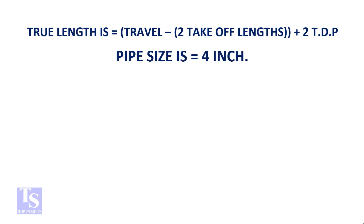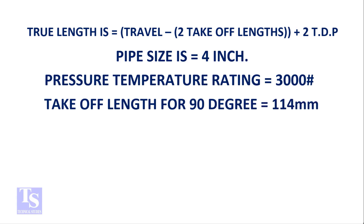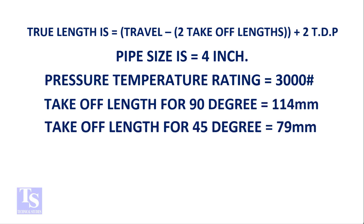The pipe size is 4 inches. Pressure temperature rating is 3,000 pounds. Take-off length for the 90-degree elbow is 114 millimeters. Take-off length for the 45-degree elbow is 79 millimeters. TDP is 28 millimeters.